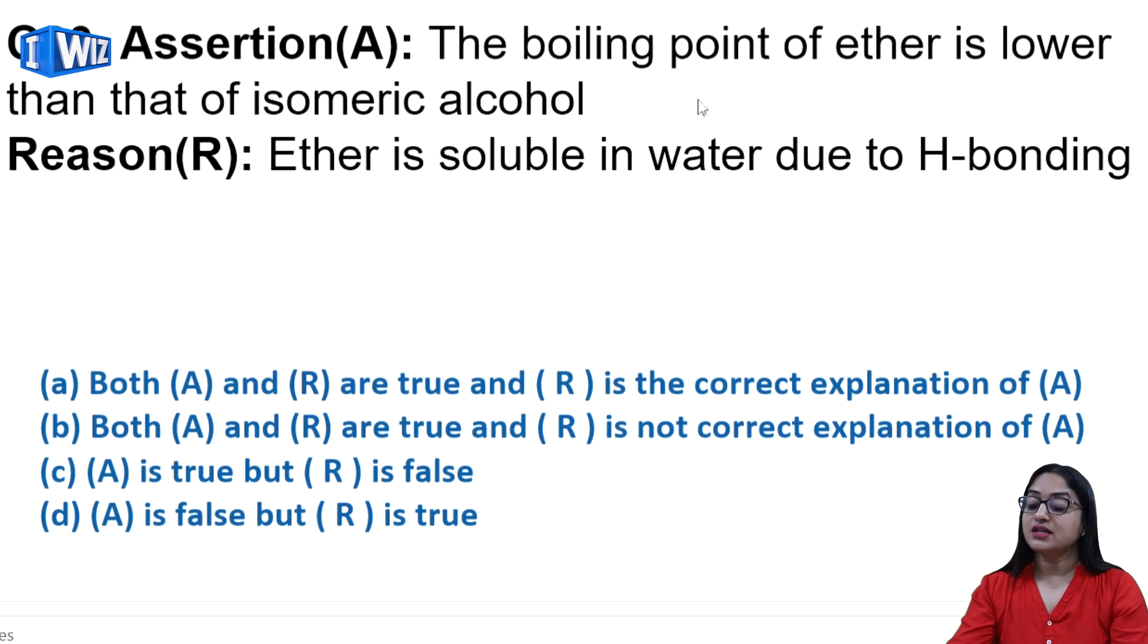Next: the assertion is the boiling point of ether is lower than that of isomeric alcohol. Very true, because in alcohol intermolecular hydrogen bonding increases the boiling point. Ether is soluble in water due to hydrogen bonding. The solubility of ether is due to hydrogen bonding. So B is the correct answer - the statements are true but the reason is not the correct explanation of assertion.